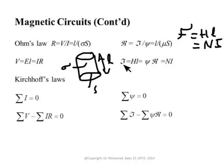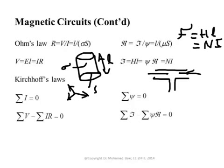Another way of writing the magnetomotive force is that it equals Ni. We can apply Kirchhoff's current law analog: when we have a number of fluxes flowing in or out from a node, we say that the sum of fluxes flowing out from that node equals zero — flux flowing in must equal flux flowing out. Again, magnetic flux plays the same role as current.